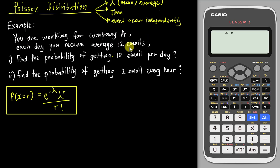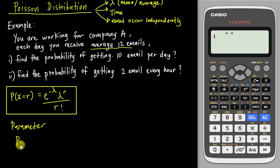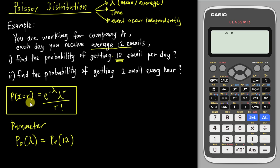The question is: you are working for Company A, and each day you receive an average of 12 emails. Find the probability of getting 10 emails per day. First, identify your lambda value — the word 'average about 12' tells us lambda equals 12. We write the parameter as Po(12). They ask for the probability of getting 10 emails per day, so 10 is our r value. Since both use 'per day', the time unit matches, so we can substitute directly: P(X = 10).